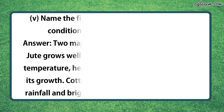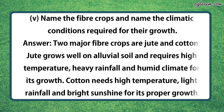Fifth part says, name the fiber crops and name the climatic conditions required for their growth. So the answer is, jute and cotton. Jute grows well on alluvial soil and requires high temperature, heavy rainfall and humid climate for its growth. And cotton needs high temperature, light rainfall and bright sunshine for its proper growth.